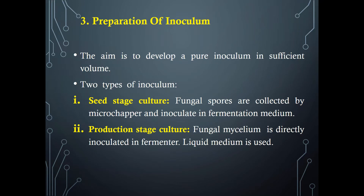The third step involves preparation of inoculum, with the aim to develop a pure inoculum in sufficient volume. There are two types: seed stage culture and production stage culture. In seed stage culture, fungal spores are collected and inoculated in the fermentation medium. In production stage culture, fungal mycelium is directly inoculated into the fermenter using mostly liquid medium. The key difference is that fungal spores are used for seed stage culture, while fungal mycelium is used for production stage culture.